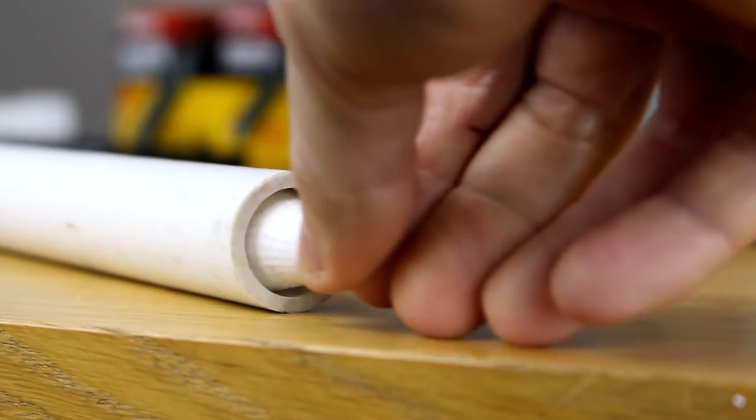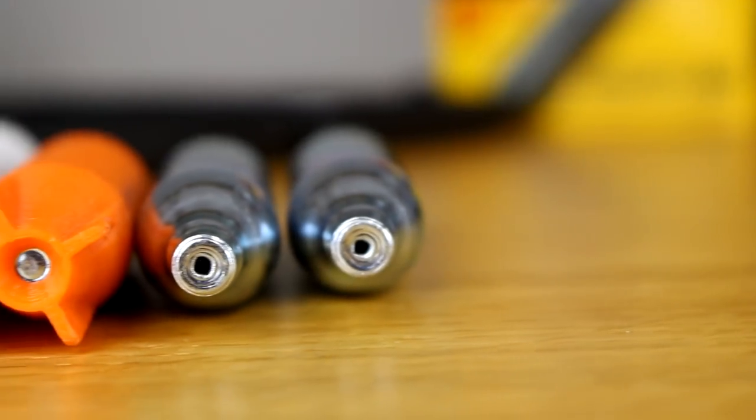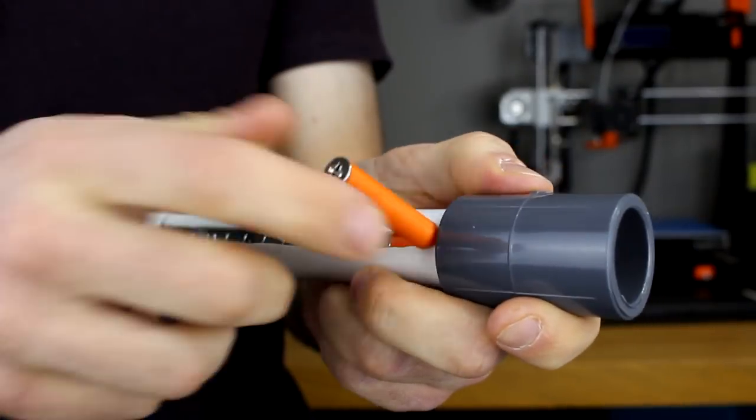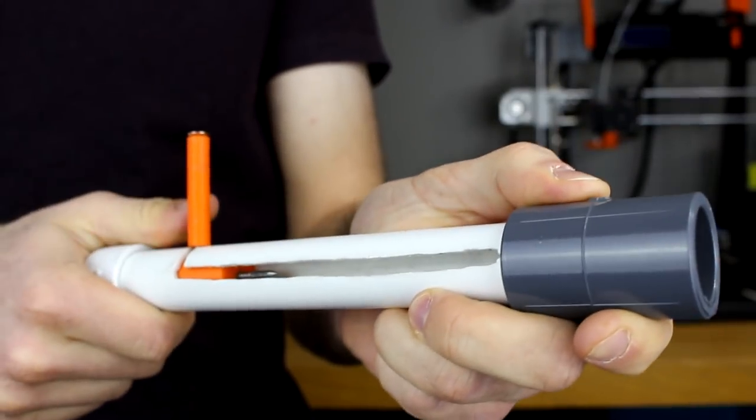The PVC pipe is what the rockets will be launched out of. These rockets can be launched simply by breaking the seal at the bottom of the cartridge. To do this effectively I made a pretty simple trigger mechanism.